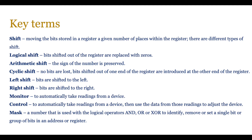An arithmetic shift preserves the sign of the number while the number itself is shifted. In a cyclic shift no bits are lost — bits shifted out one end of the register are introduced at the other end. So if you had a one at the beginning shifting left and it goes out of the register, it is added to the right-hand side. You also have left shift and right shift, and a mask, which is a number used with logical operators AND, OR, or XOR to identify, remove, or set a single bit or group of bits to particular values.